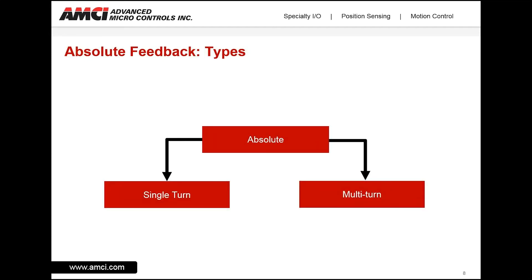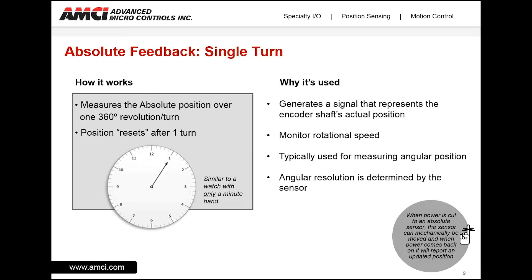Absolute rotary sensors can be either single turn or multi-turn. A single turn application measures the absolute position over 360 degrees or one revolution. After that one revolution, the position resets or starts over — think of it as a watch with only a minute hand; it cannot tell me how many hours have passed. Single turn sensors are used to generate a signal that represents the encoder shaft's actual position, monitor rotational speed, and measure angular position resolution. The angular resolution is determined by the sensor and can provide up to 16 bits of absolute position feedback depending upon the sensor.